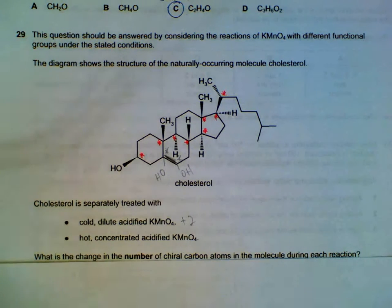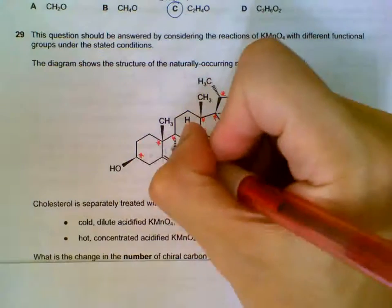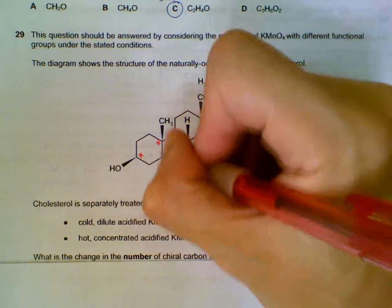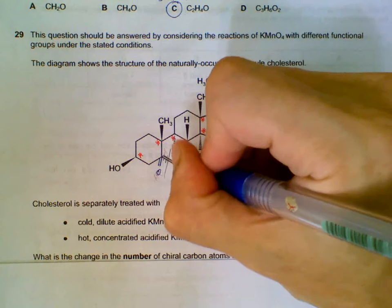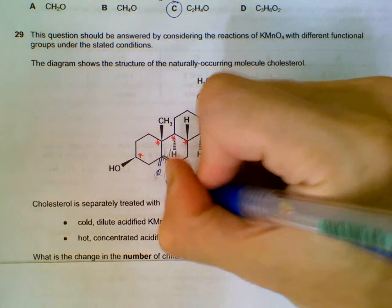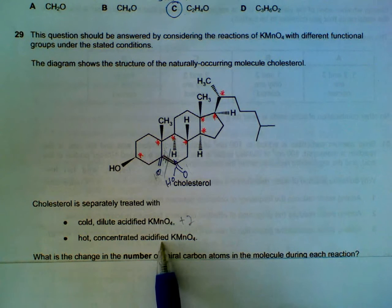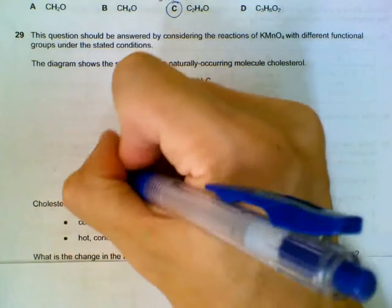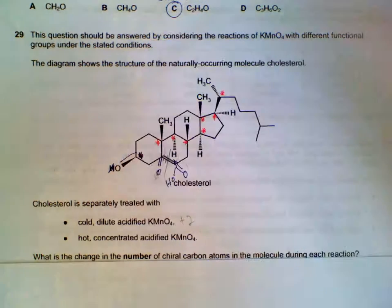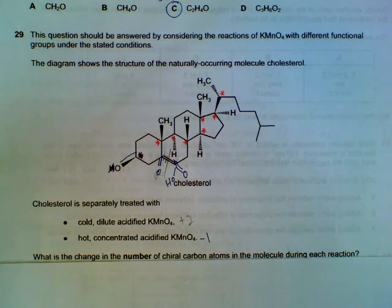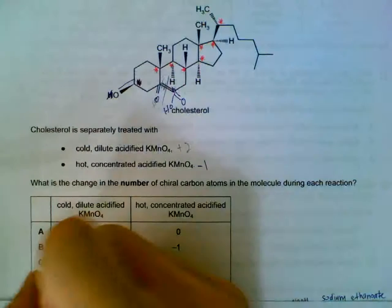If we use hot concentrated KMnO4, hot concentrated KMnO4 will be cleaving this one. And then this one will form a ketone. This will form a ketone. And this one will form an acid. But don't forget, we have an OH here. Under hot concentrated KMnO4, it will actually be oxidized into a ketone. So, this chiral carbon will no longer exist. So, there's a drop in the number of chiral carbons. Due to the loss of this chiral carbon. That's why we have plus 2, minus 1.